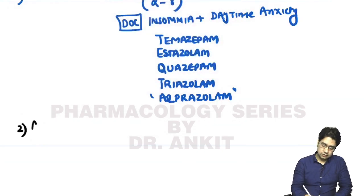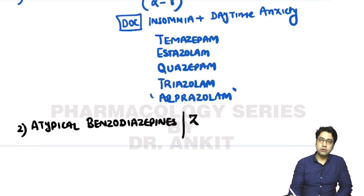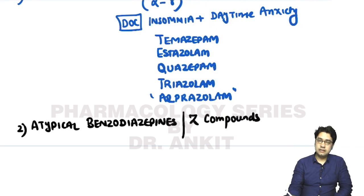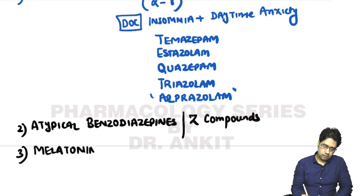The second class of drugs are atypical benzodiazepines, also known as Z compounds because their names start with the letter Z. The third class is melatonins.